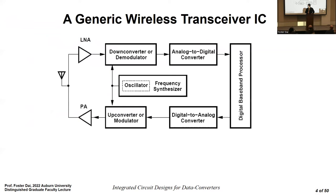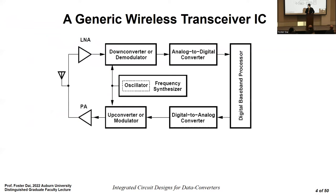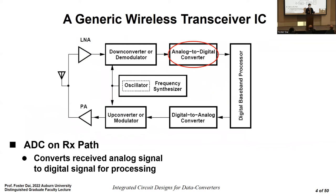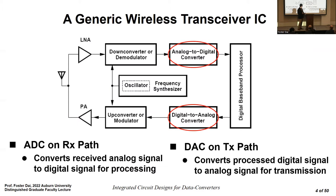ADCs play an important role in any communication and sensor network. On the receiver path we use an ADC to digitize the received analog signal into a digital format, and for the transmitter we have a DAC — a digital-to-analog converter — which converts the digital signal to an analog signal that is then up-converted to the carrier frequency for transmission.